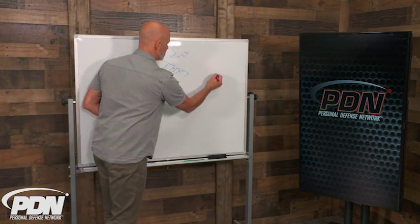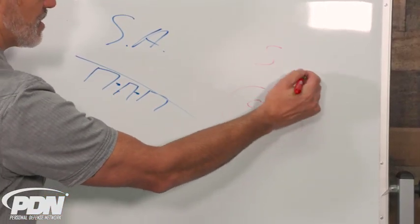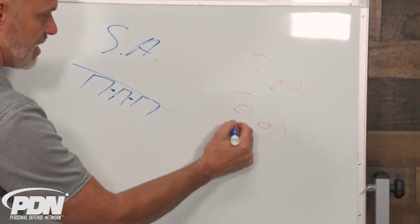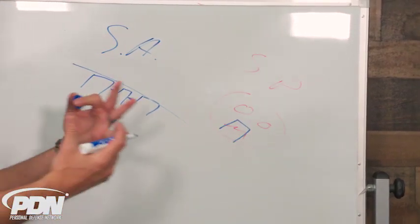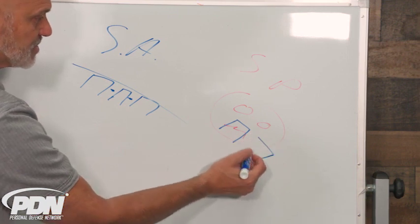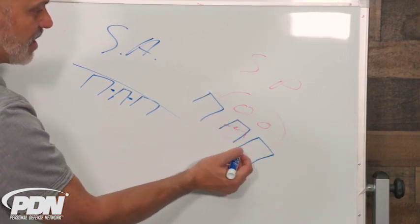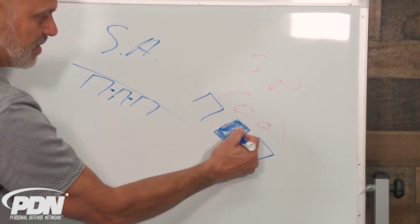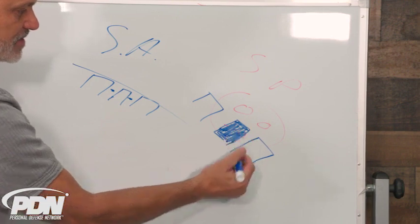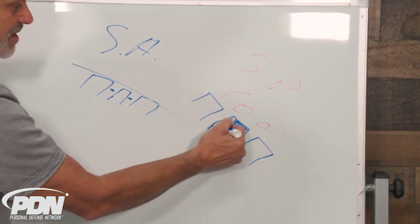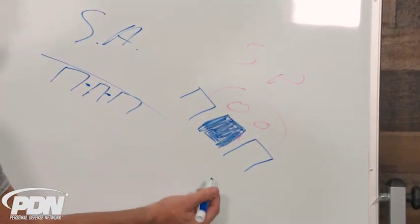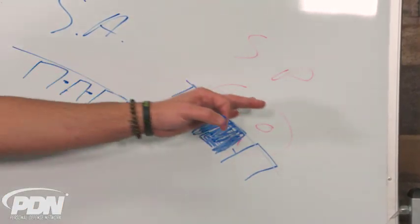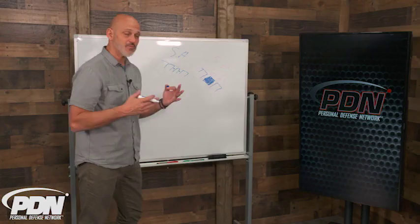That's where sight picture comes in. Let's say we have a bad guy here — sight picture is when we take that front sight and superimpose it over what we want to hit. We still have the alignment in the background, but now our focus is very specifically on the front sight. So we've got a hard focus on the front sight, with equal amounts of light on either side, even across the top, superimposed over the target.